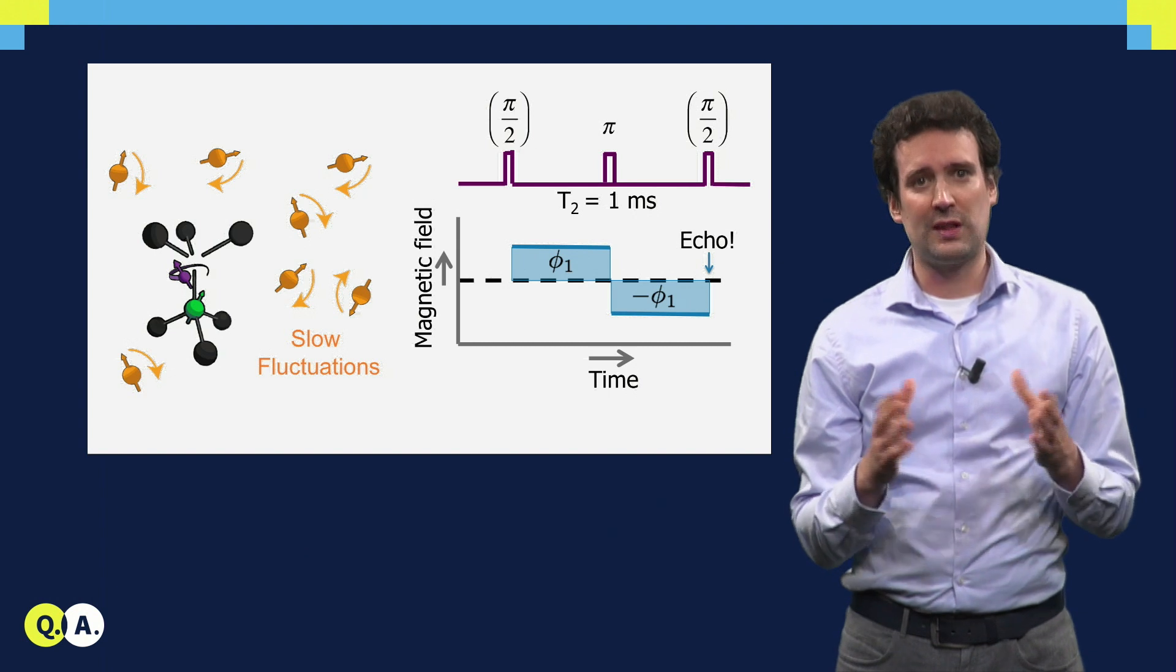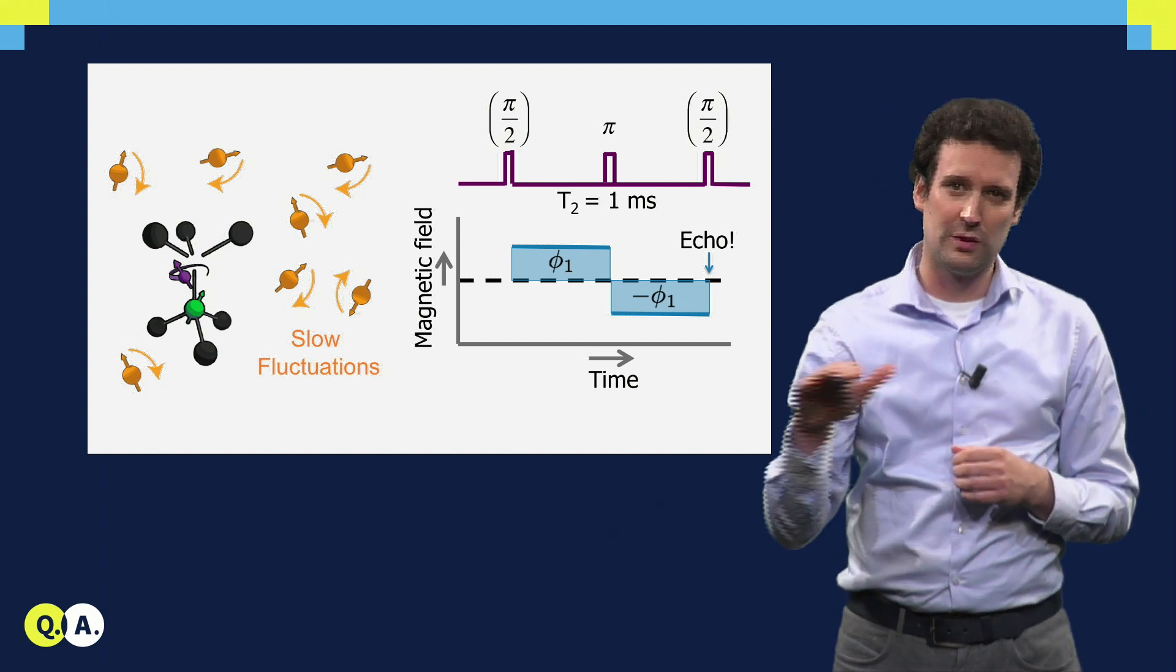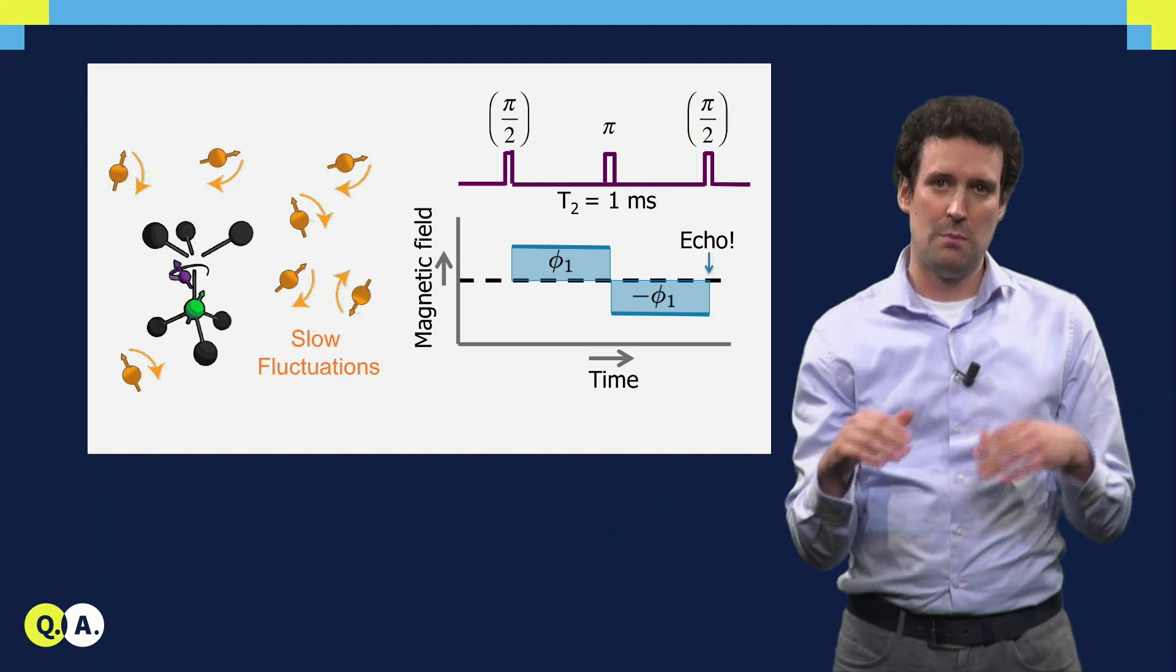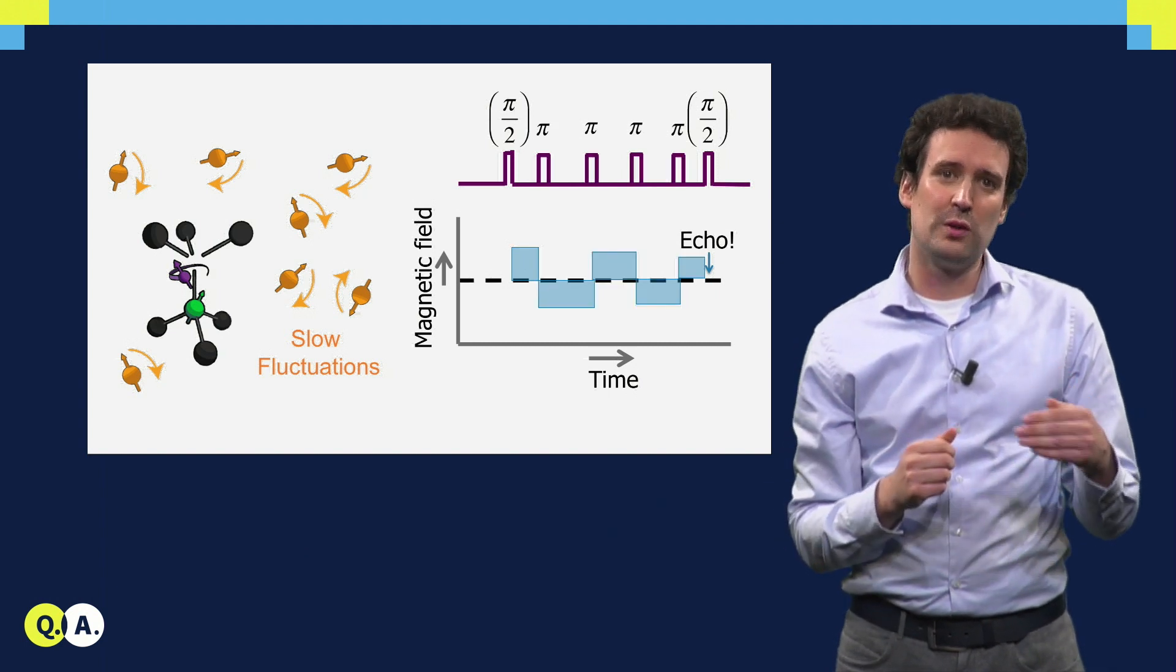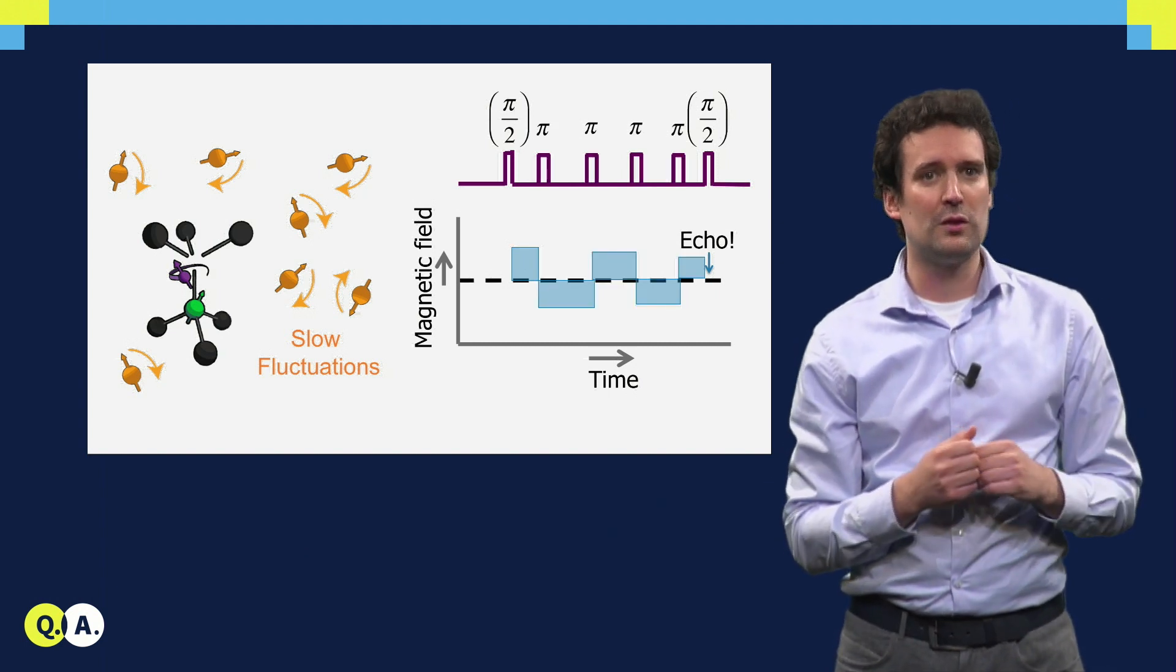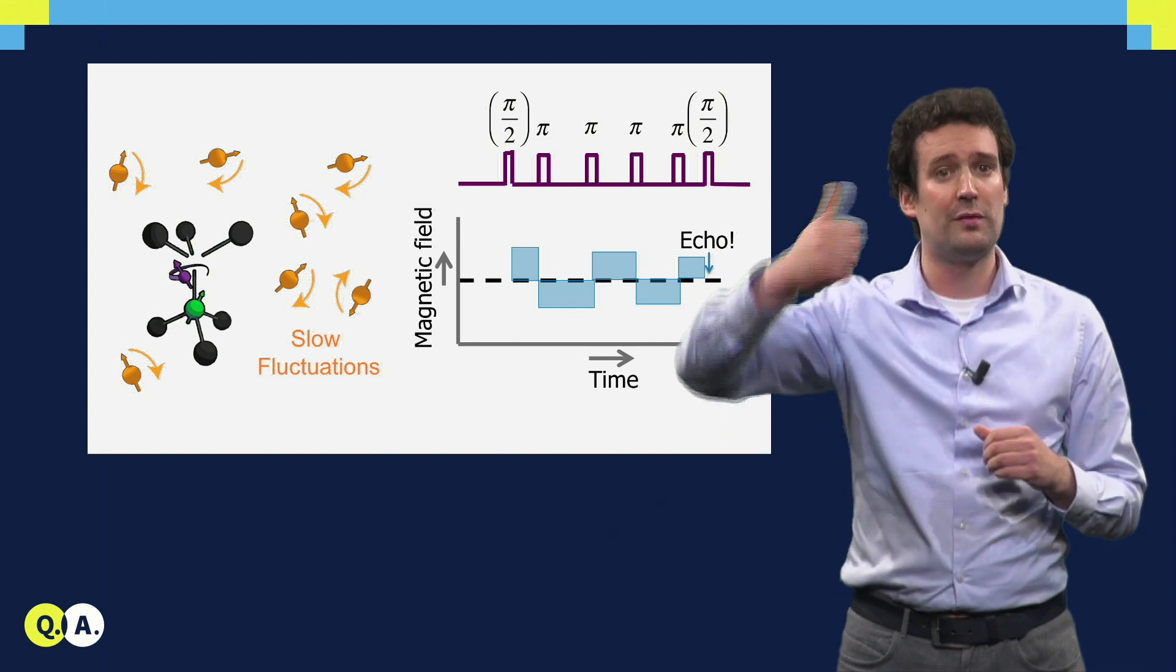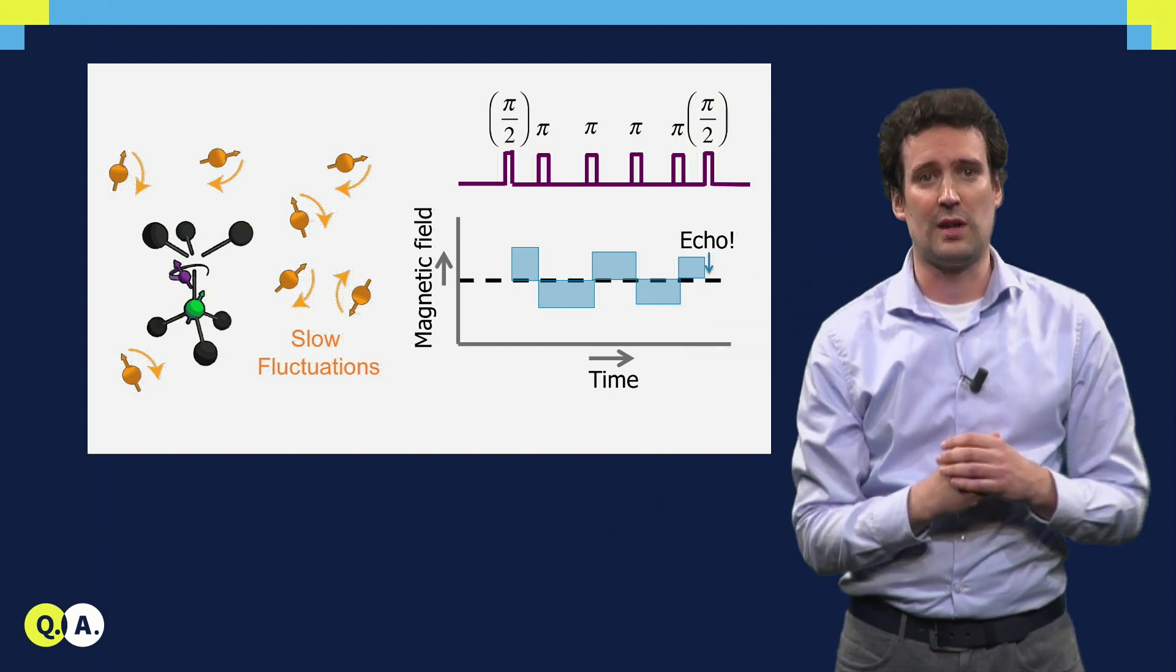And of course this cancellation only works if the magnetic field is constant over time. But don't worry, as long as the field fluctuates slowly, we can just flip the electron spin multiple times faster and faster, so that everything still averages out.